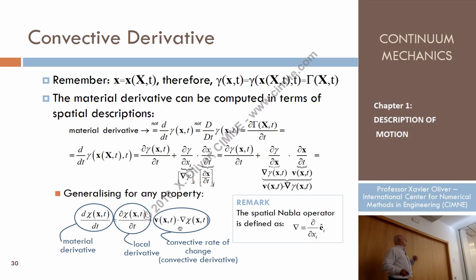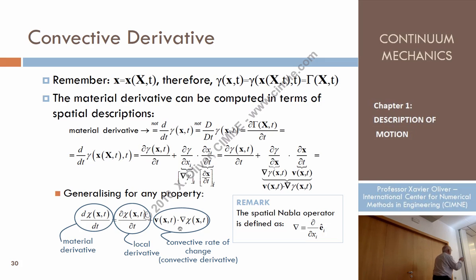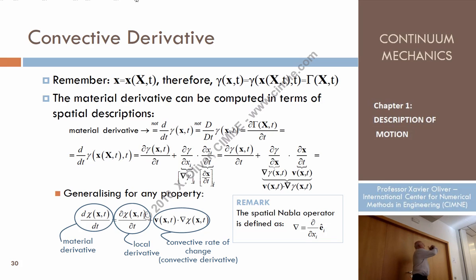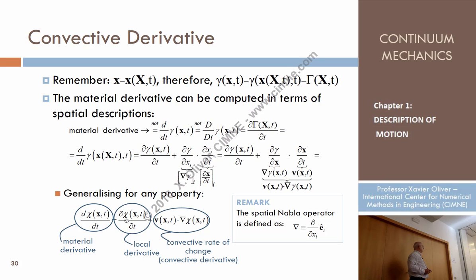So properties in a continuum medium can be transported in different ways. The convective rate of change is the part due to the motion of particles, and the local (non-convective) rate of change accounts for all other effects where properties change without particle movement.